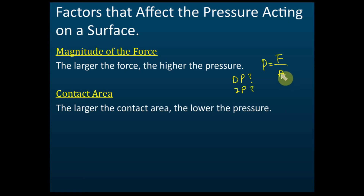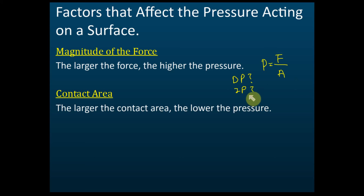It's okay if you don't know, because this is typically covered in modern math and your teacher may not have discussed it yet. So I'm going to spend about five to ten minutes explaining what directly proportional and inversely proportional mean, because these are very important in physics. Pressure is directly proportional to force and inversely proportional to area, so the larger the contact area, the lower the pressure.